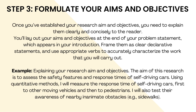Step three: formulate your aims and objectives. Once you've established your research aim and objectives, you need to explain them clearly and concisely to the reader. You'll lay out your aims and objectives at the end of your problem statement, which appears in your introduction. Frame them as clear declarative statements and use appropriate verbs to accurately characterize the work that you will carry out.